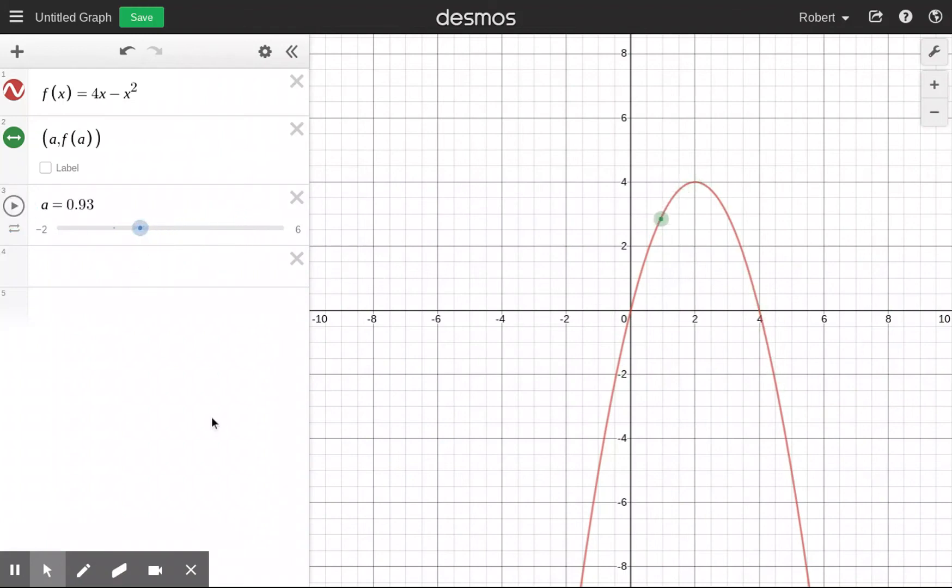Now what I'd like to do is plot the equation of the tangent line that touches the graph at this point. Now to find the equation of any line whatsoever, I need to know a point that's on the line and I need to know the slope of that line. Well, the slope of that line is f prime of a. So I can actually just type f prime of a and I would know what the slope is. And notice that if I drag the a, the derivative value, the slope of the tangent line changes.